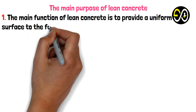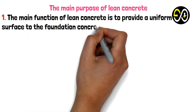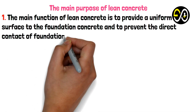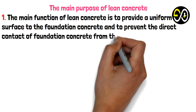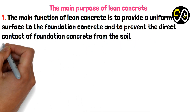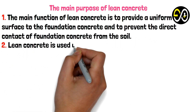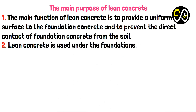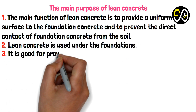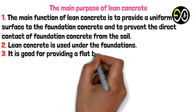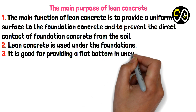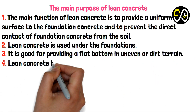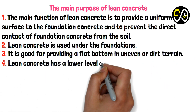The main purposes of lean concrete: 1. The main function is to provide a uniform surface to the foundation concrete and to prevent direct contact of foundation concrete from the soil. 2. Lean concrete is used under foundations. 3. It is good for providing a flat bottom in uneven or difficult terrain.